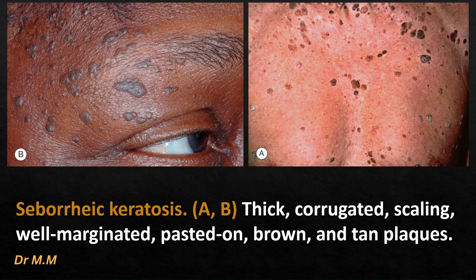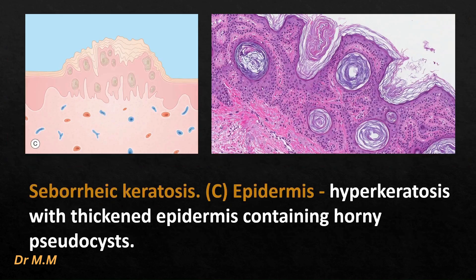Seborrheic keratosis presents as thick, corrugated, scaling, well-marginated, pasted-on brown and tan plaques. Histologically, the epidermis shows hyperkeratosis with a thickened epidermis containing horny pseudocysts.